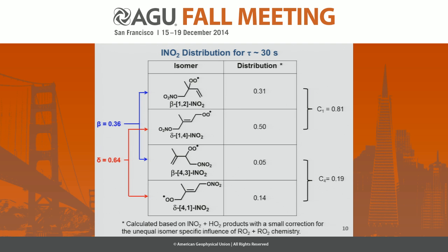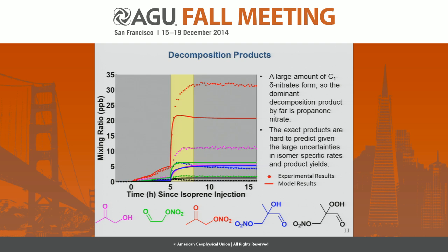Showing the decomposition products when we turned on lights and generated OH in the chamber — this is a sum of all the nitrates formed and their decomposition products — we see a very large yield of propanone nitrate. This is expected because mostly we're forming the C1 delta nitrates. This might be usable as a tracer in the field for this chemistry. However, it's hard to predict exact products because of large uncertainties in each isomer's reactions with OH and ozone. Understanding this later-generation chemistry is necessary to predict what's going on.